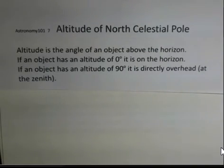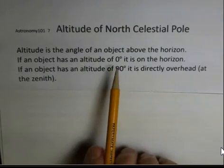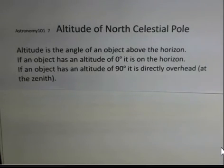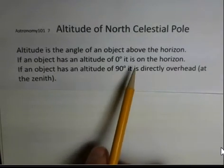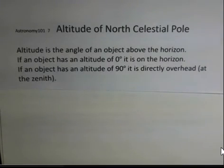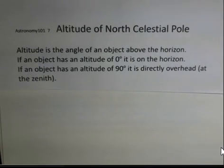We'll talk about a few definitions here. First, altitude — that's how far an object is above the horizon. The reference location is the horizon. If the altitude is zero, the object is on the horizon. At sunrise, the sun would be towards the east, but it would have an altitude of zero degrees when it rose. It also has an altitude of zero degrees when it sets.